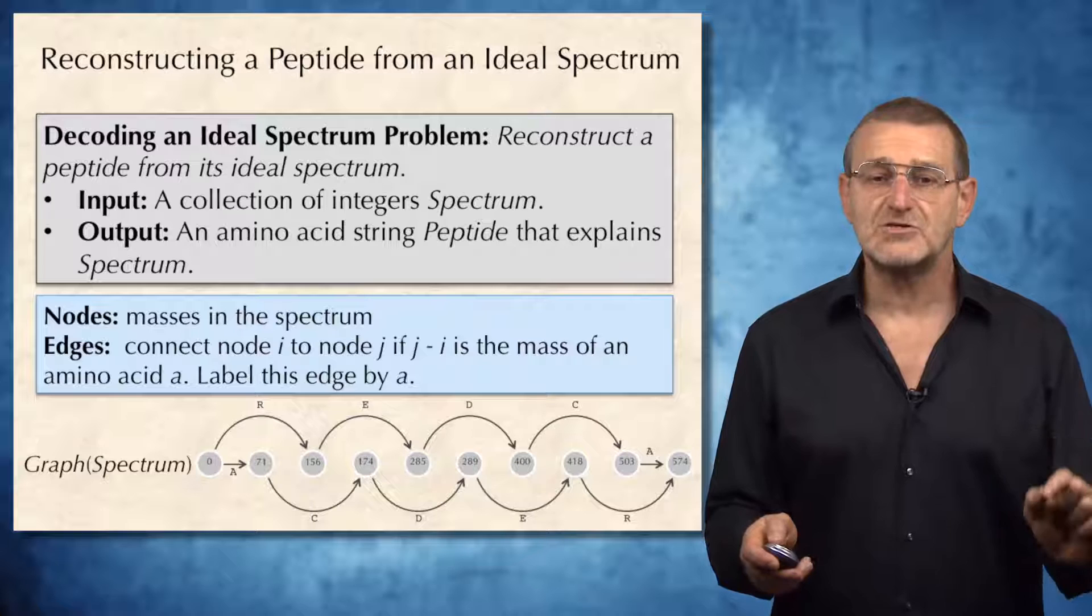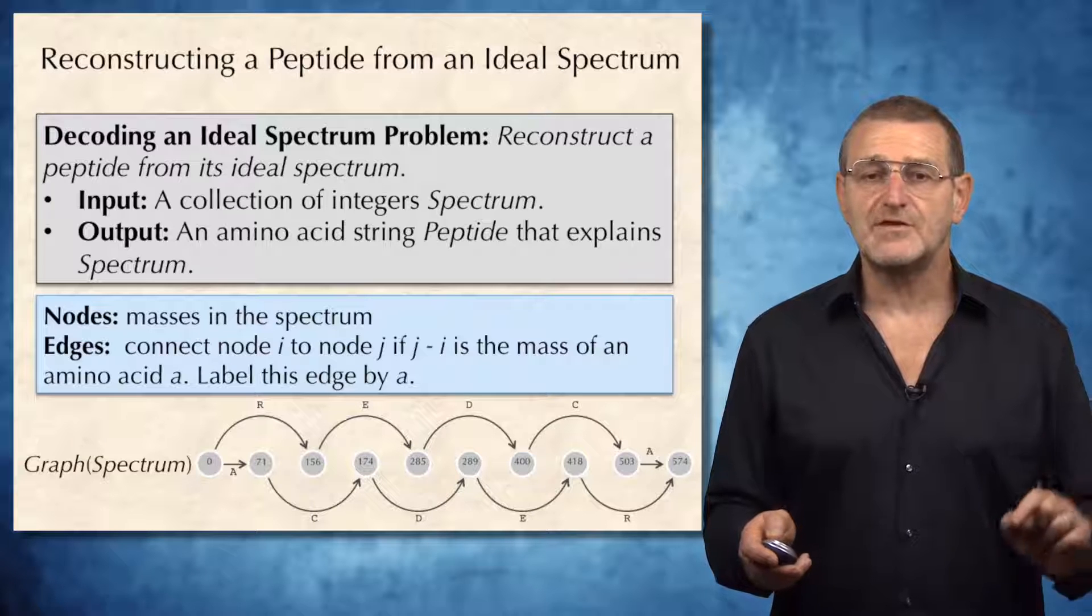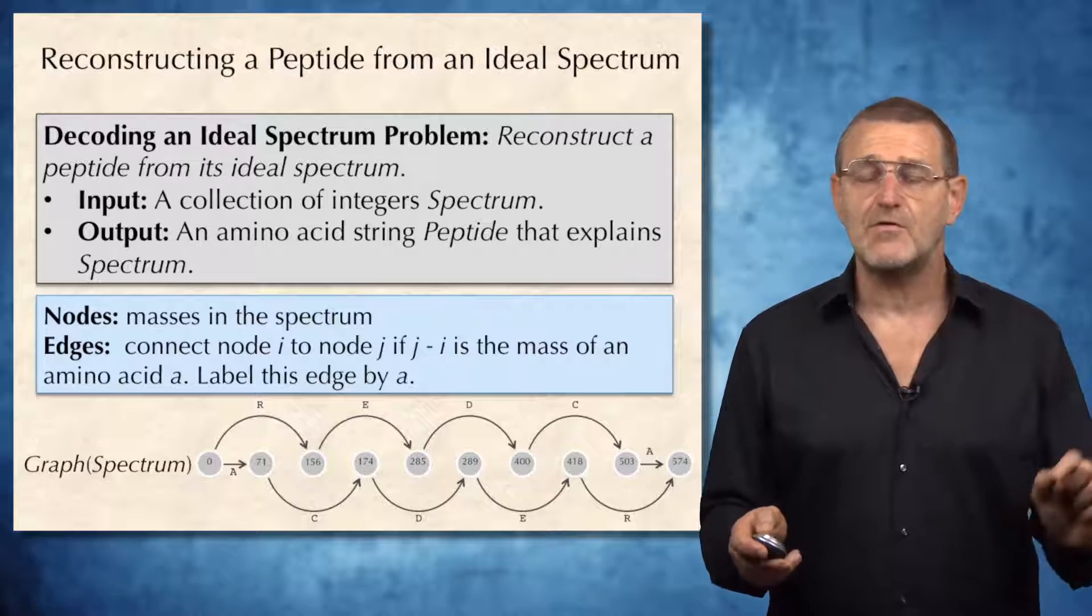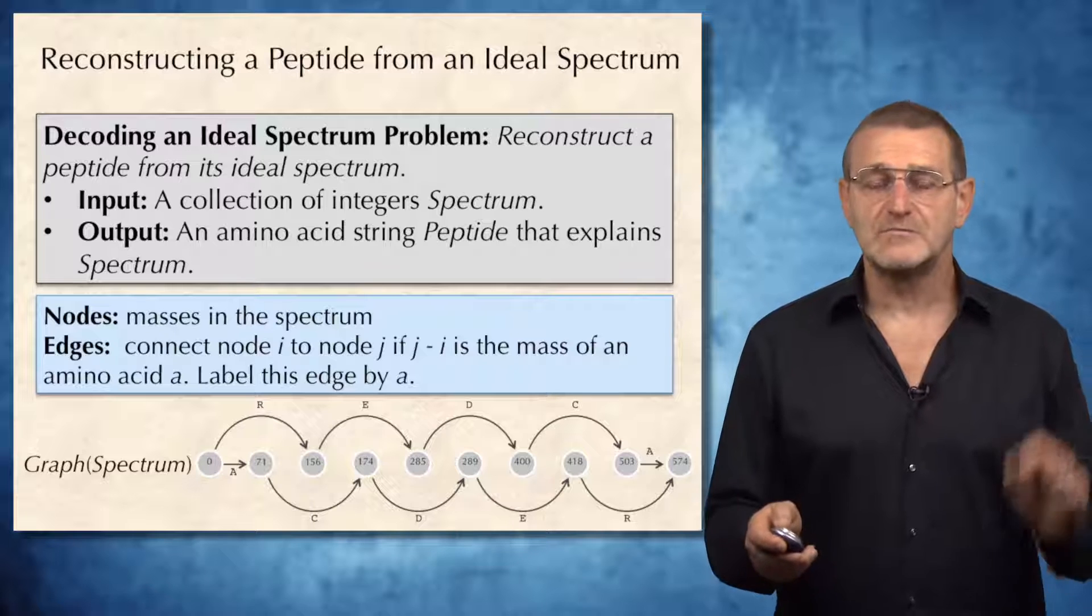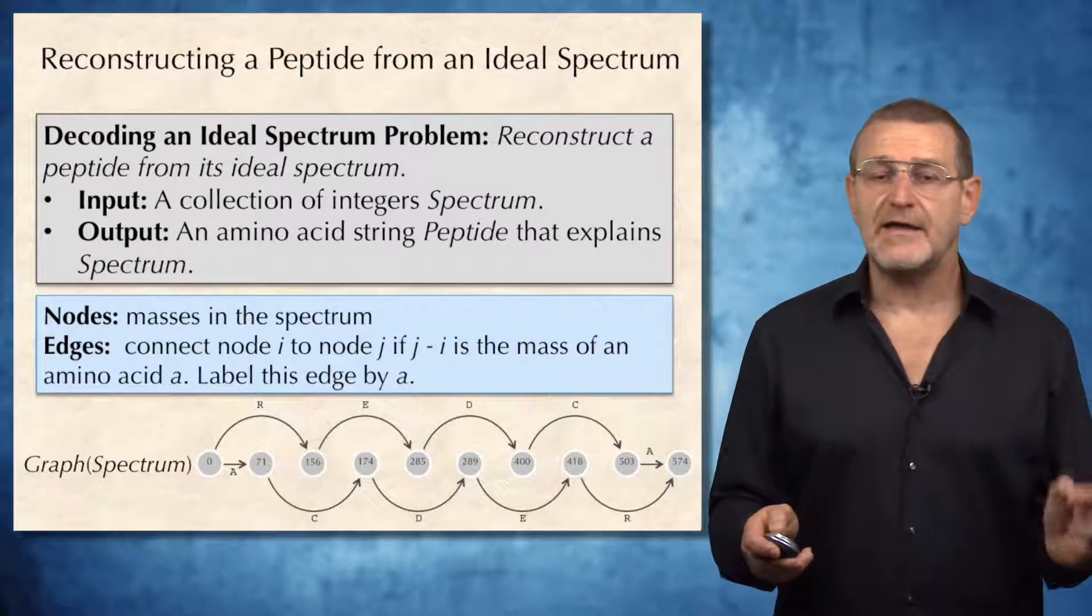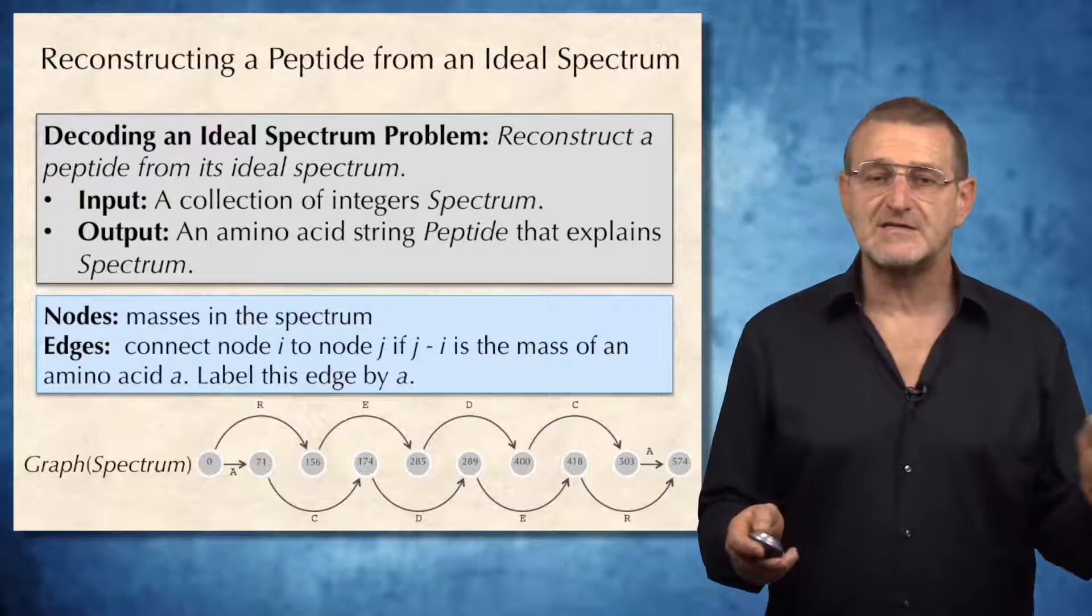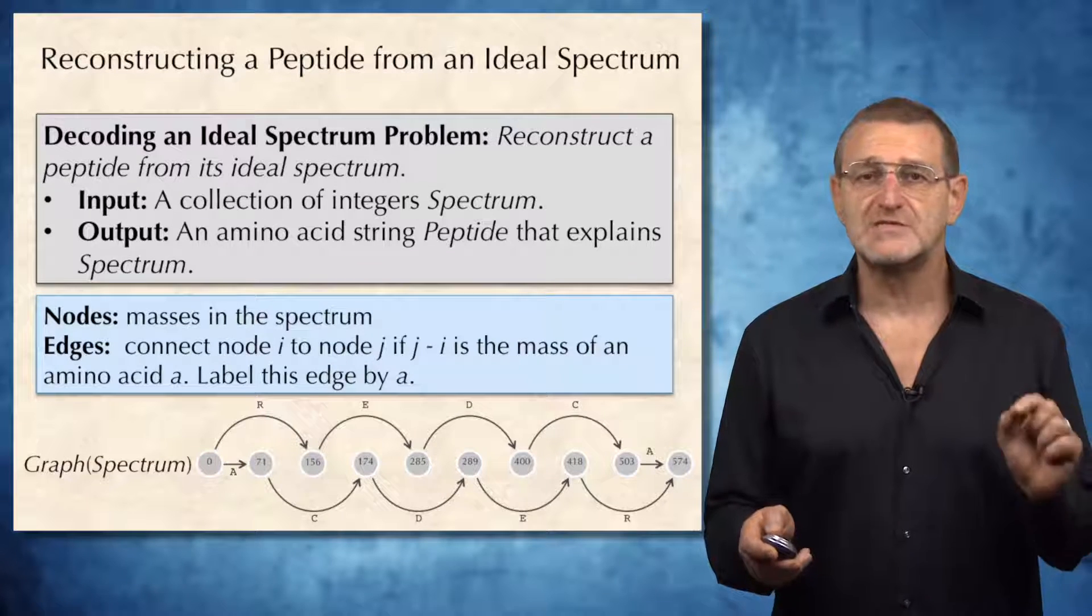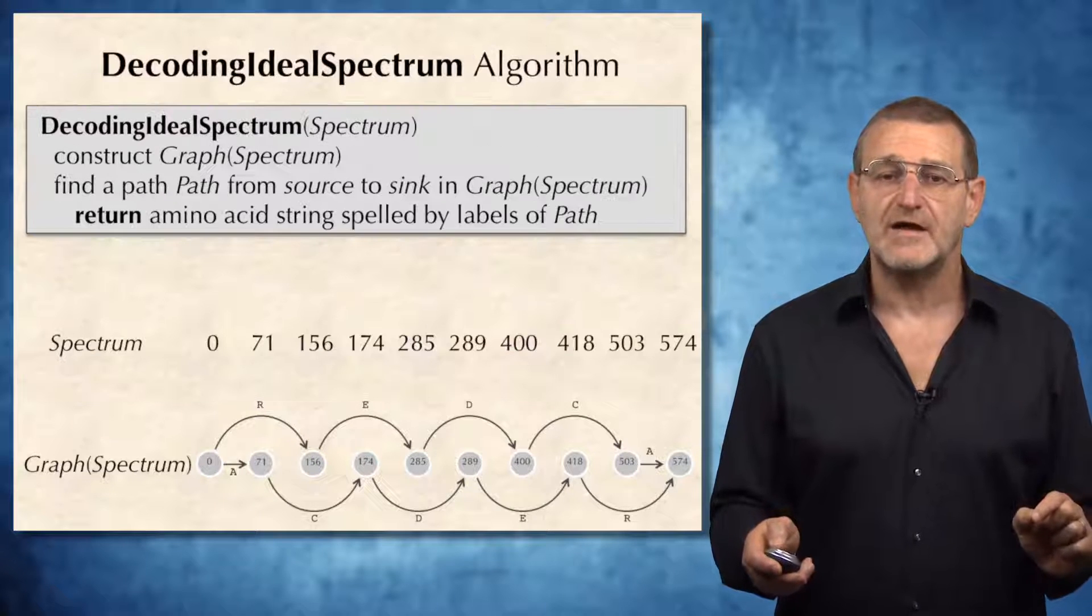And what will be the solution of our problem, of decoding an ideal spectrum problem? Of course, we need to walk from the source, node 0, to the sink. And the path that we spell will correspond to the peptide we are trying to find.